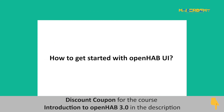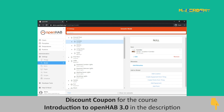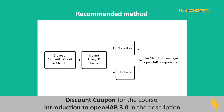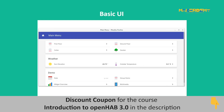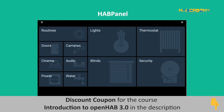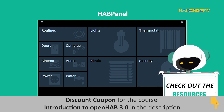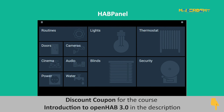A common beginner question is: where do I start, or how do I choose the best UI for my smart home? The recommended way to get started is by modeling your smart home using a semantic model in the Main UI. Once done, you can use the Main UI to manage your things and items using either the file-based or UI-driven approach. Then you can branch out to application-specific UIs like Basic UI and HAB Panel for further customization. Please also check out the resources for a video demo of the Main UI features from OpenHAB VirtualMe 2020.